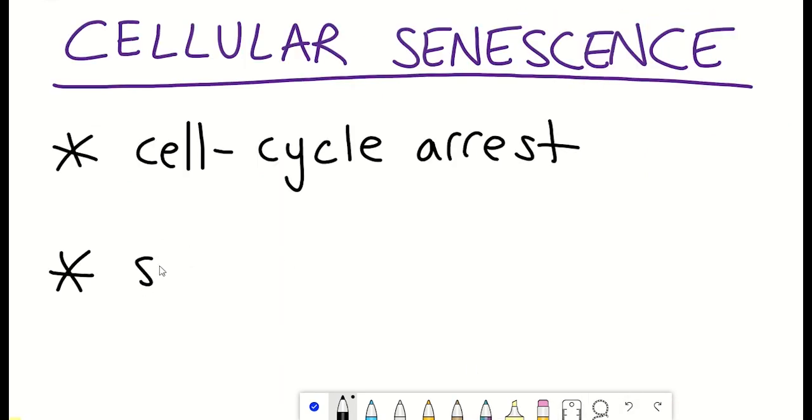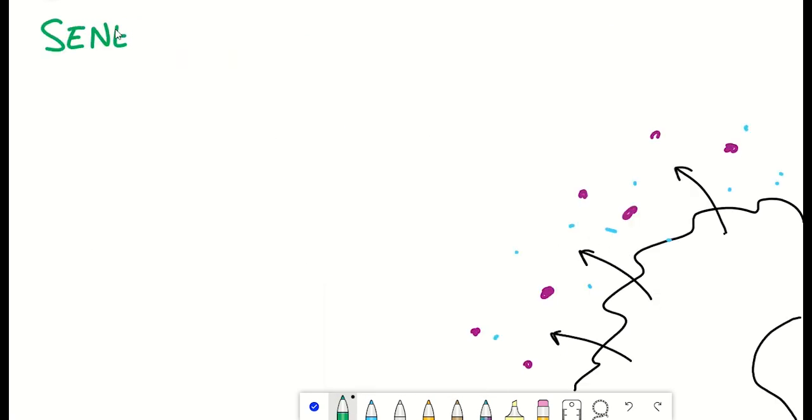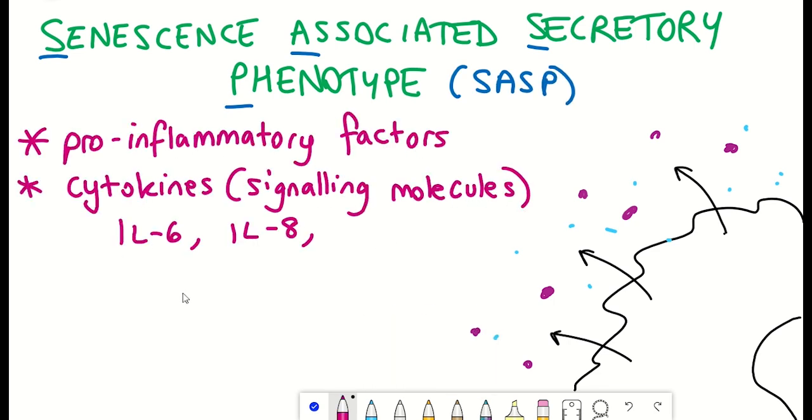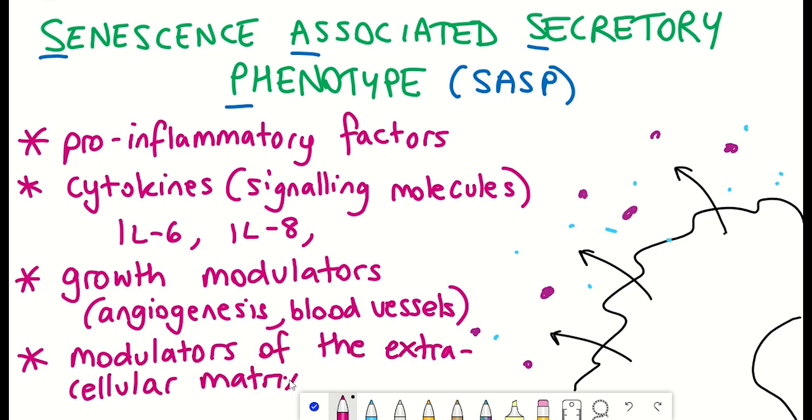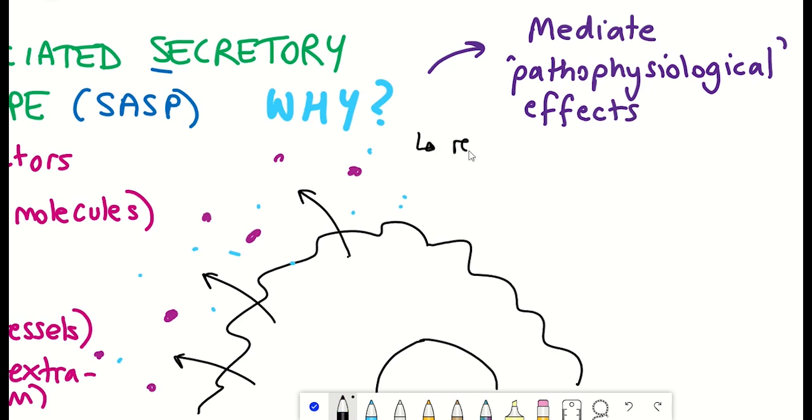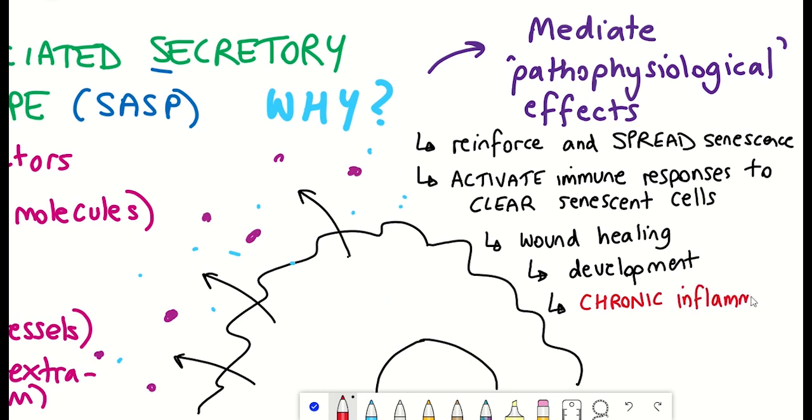Another feature of senescence is the senescence associated secretory phenotype. And so the secretory phenotype refers to a variety of different molecules that are secreted from senescent cells. These include pro-inflammatory factors and signaling molecules. And the current theories as to why there is such a secretory phenotype of senescent cells is thought to help in activating the immune responses to be able to clear senescent cells which is beneficial for wound healing and development. However if senescent cells are not cleared it can result in chronic inflammation that can have deleterious pro-aging effects.